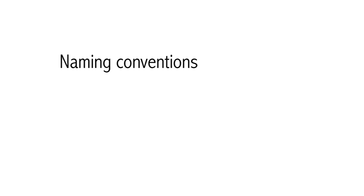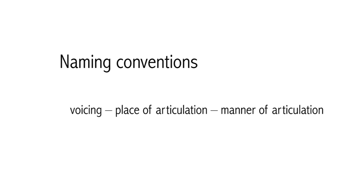Notice the convention for naming the properties of consonants: voicing, place of articulation, manner of articulation. So we say, for example, 'voiceless alveolar fricative,' not 'voiceless fricative alveolar.'